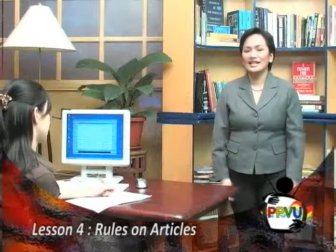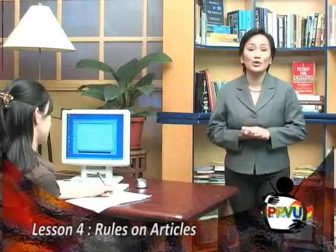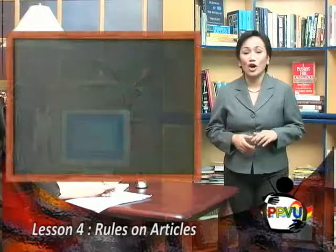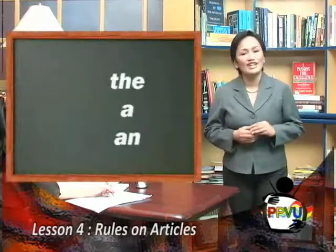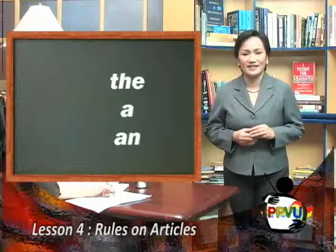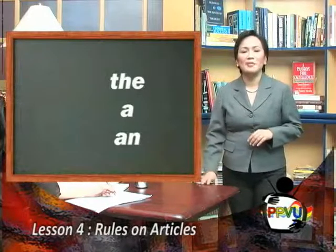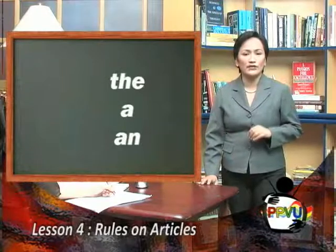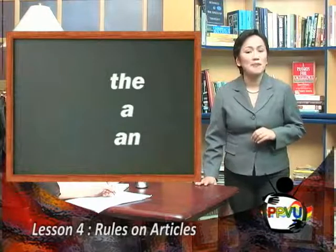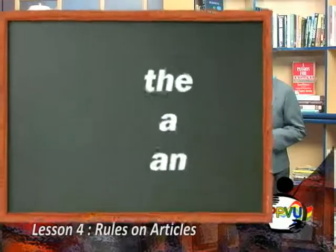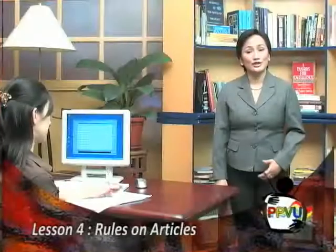Hello, once again. Lesson number four for today is on rules on articles. English has two types of articles: the definite article 'the' and the indefinite 'a' and 'an'. The use of these articles depends mainly on whether you are referring to any member of a group or to a specific member of a group.